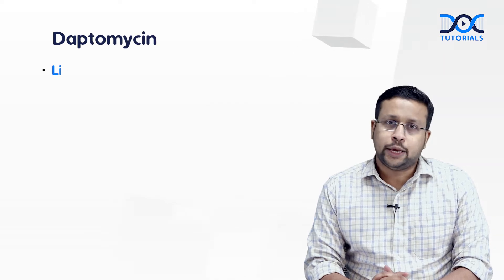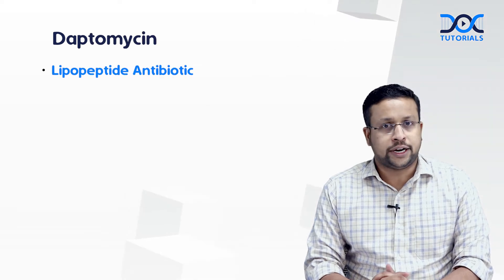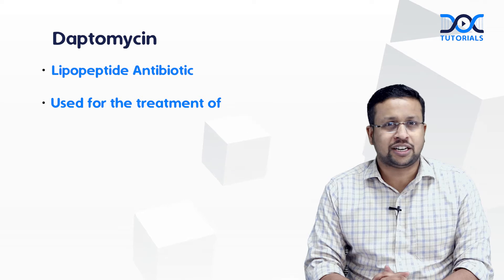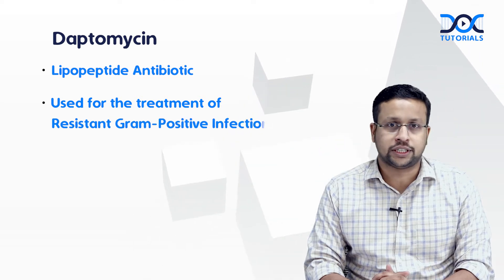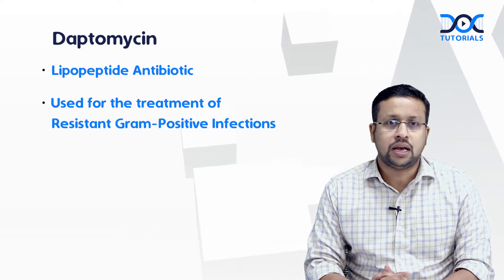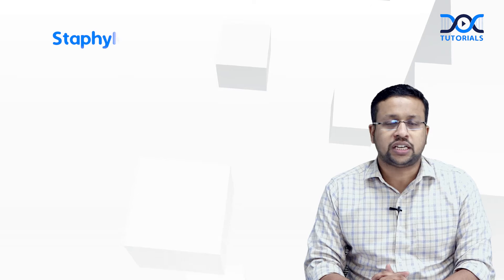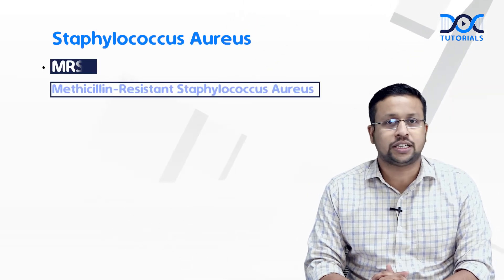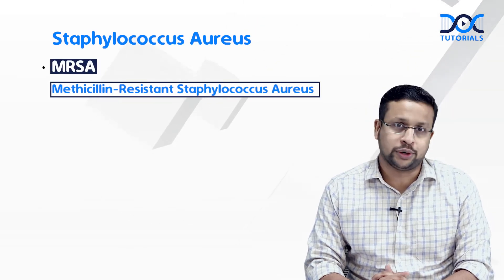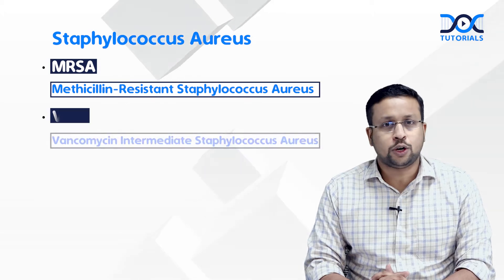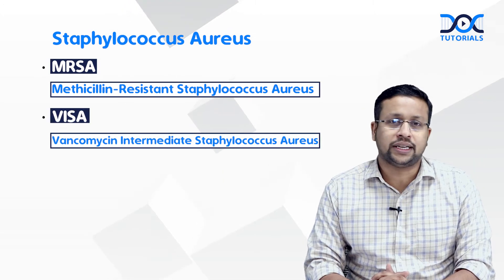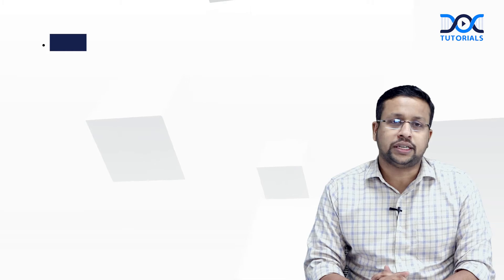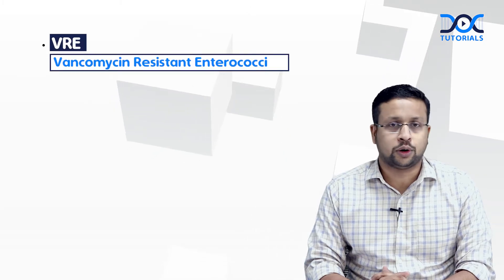Daptomycin is a lipopeptide antibiotic. It is used for the treatment of resistant gram positive infections. Its spectrum includes Staphylococcus aureus, including methicillin-resistant Staphylococcus aureus and vancomycin-intermediate Staphylococcus aureus. It can also treat vancomycin-resistant enterococci.